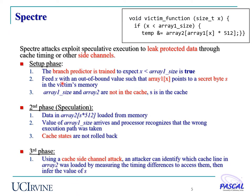Spectre attack exploits speculative execution to leak protected data through cache timing or other side channels. We show an example of Spectre attack version 1 proof-of-concept. The attack consists of three phases. In the first phase, a branch predictor needs to be trained so that it will always go inside this if-condition, and certain data must not be in the cache. In the second phase, the processor goes inside the if-condition and loads data from memory. However, when it realizes it went into the wrong execution path, it rolls back the execution, but the cache status is not rolled back. So in the third phase, the attacker can perform a cache side-channel attack to obtain the info in this array.